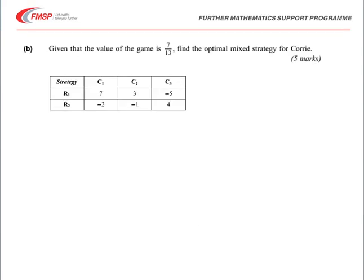With the next part of the question, we're asked given that the value of the game is 7 over 13, to find the optimal mixed strategy for Corrie. Now there are different ways of doing this. One way is to allocate probabilities to C1, C2, and C3. However, from part A of the question, we can simply state that the probability that she plays C1 will be equal to 0. That's because the solution came from C2 and C3, if you remember. So what we could do then is let Corrie play C2 with probability Q and C3 with probability 1 minus Q.